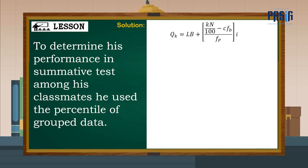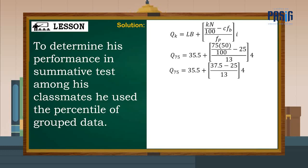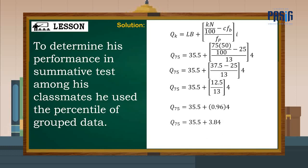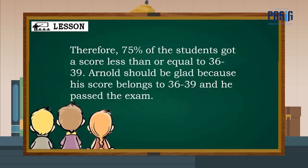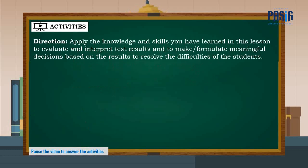Using the formula for percentile of group data: Q sub k equals lb plus the quantity (kn over 100 minus cf) divided by f, times i, and substituting the given values, the 75th percentile is 39.34. Therefore, 75 percent of the students got a score less than or equal to the range 36 to 39. Arnold should be glad because his score belongs to that range and he passed the exam. Now it's your time to do the activities.